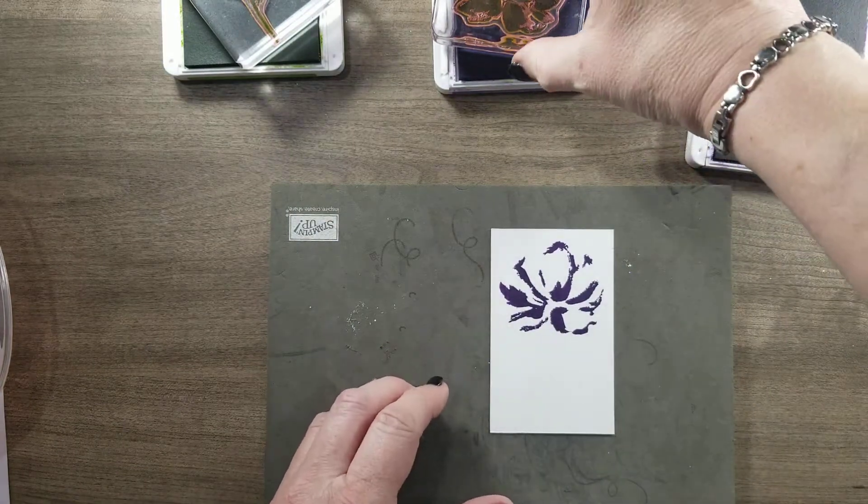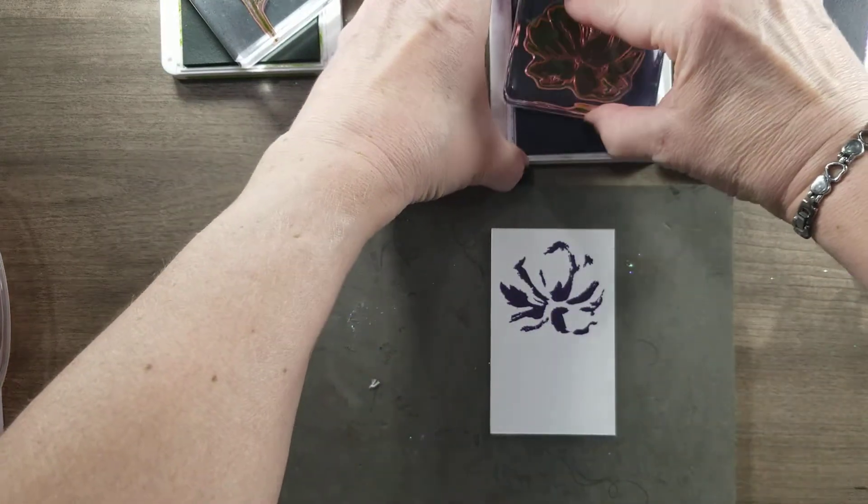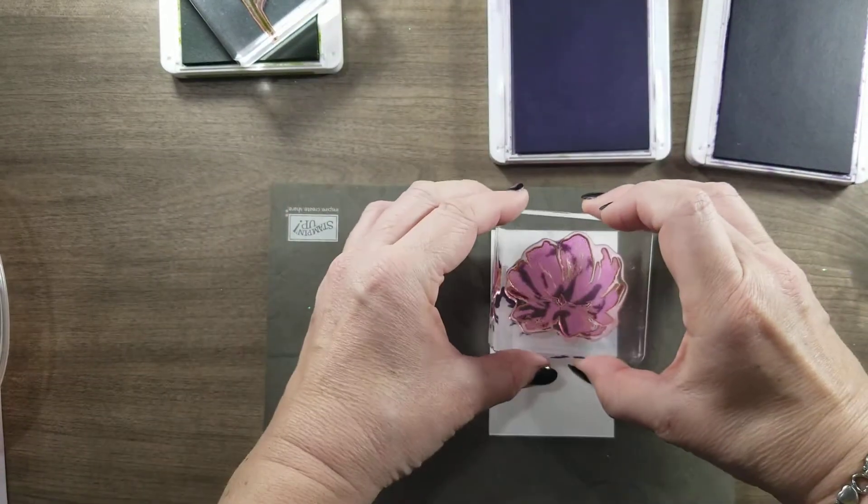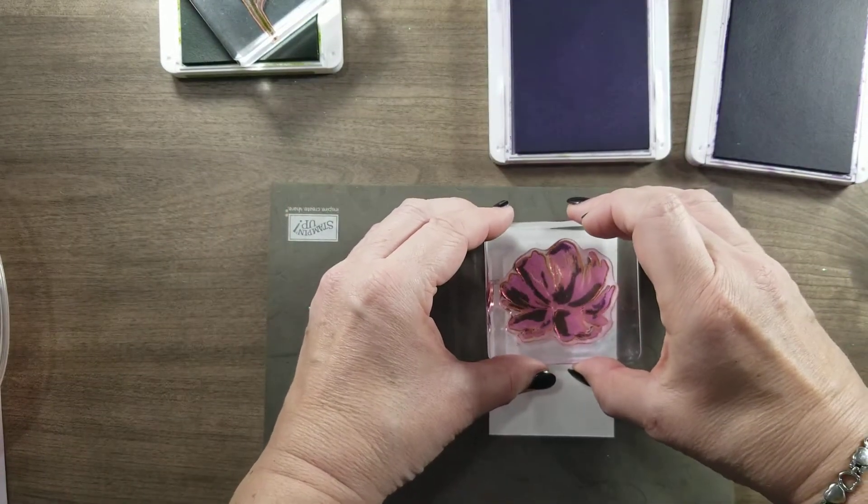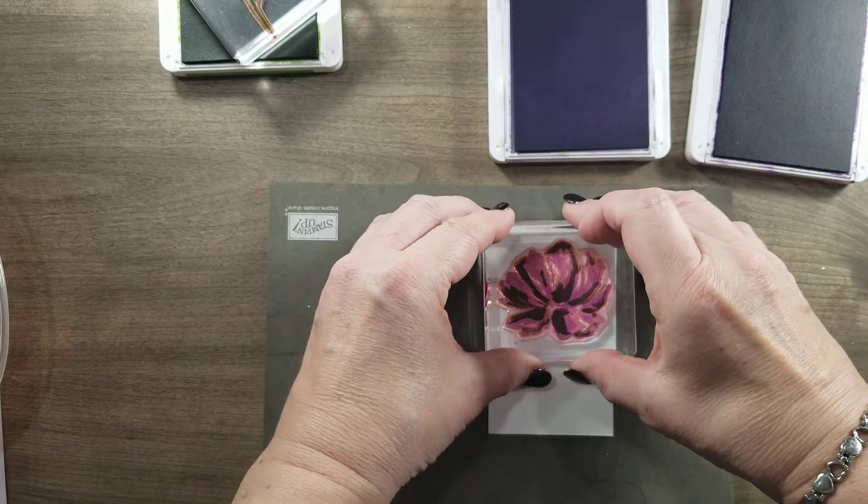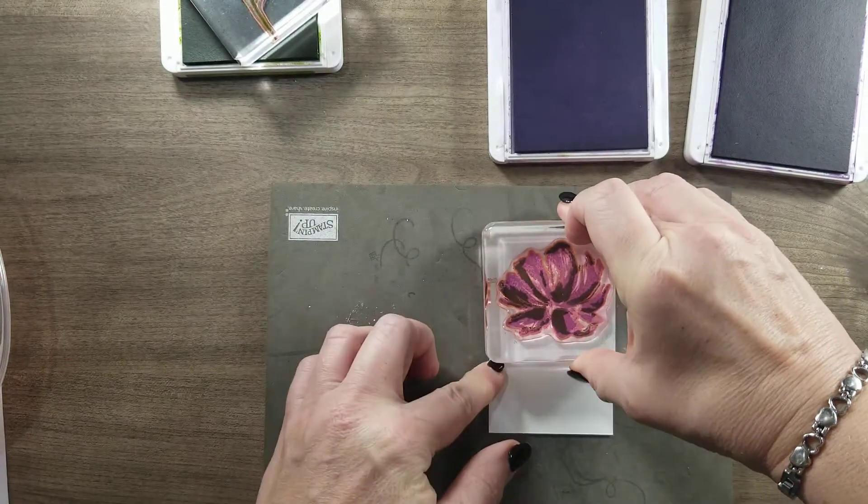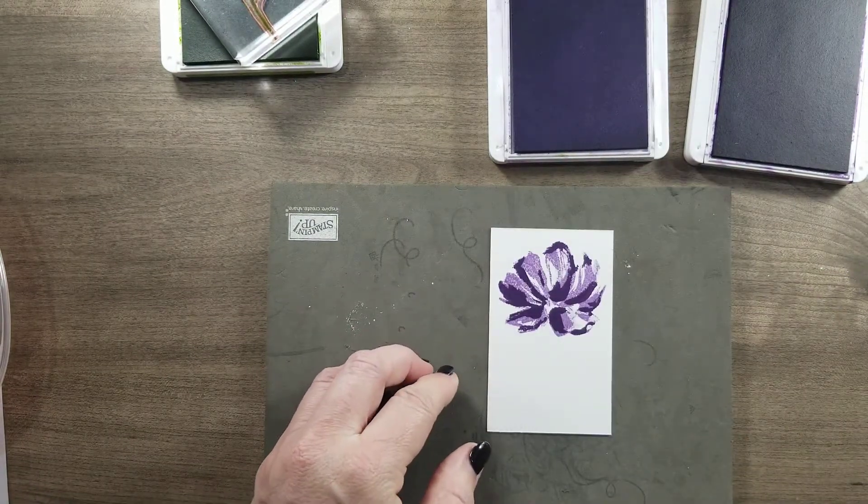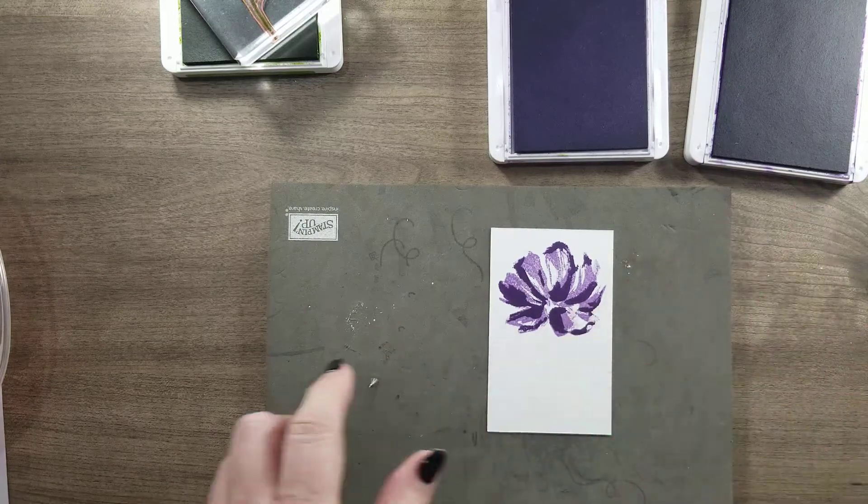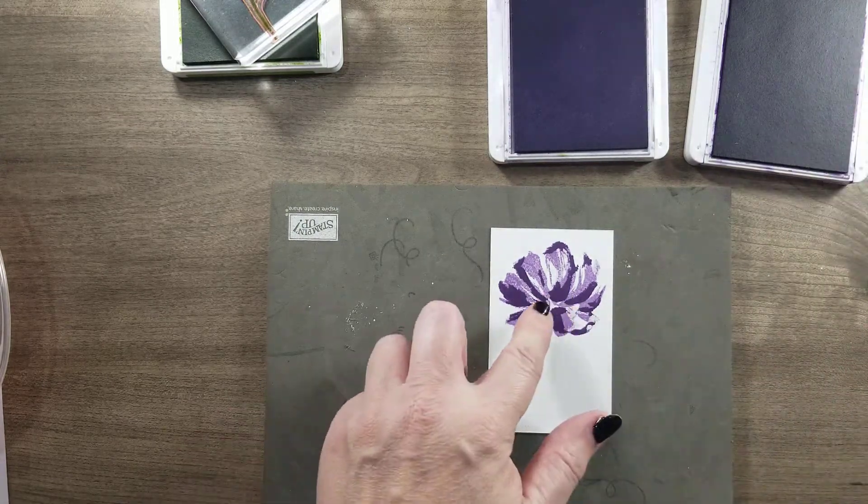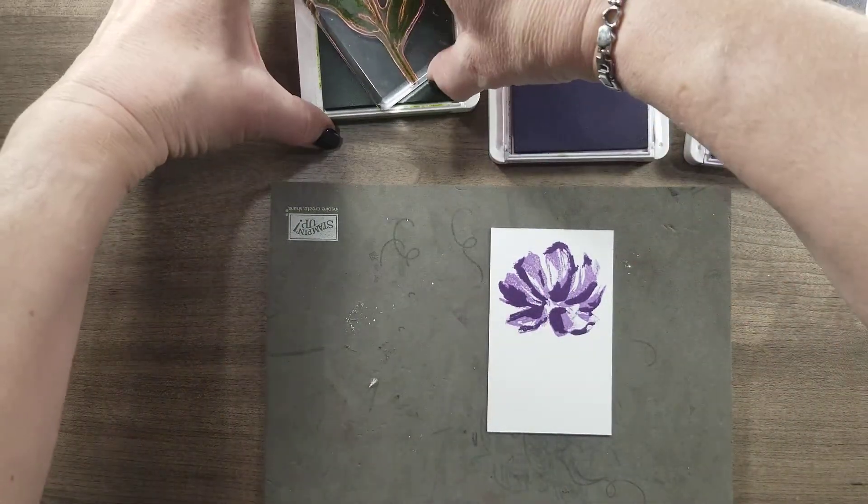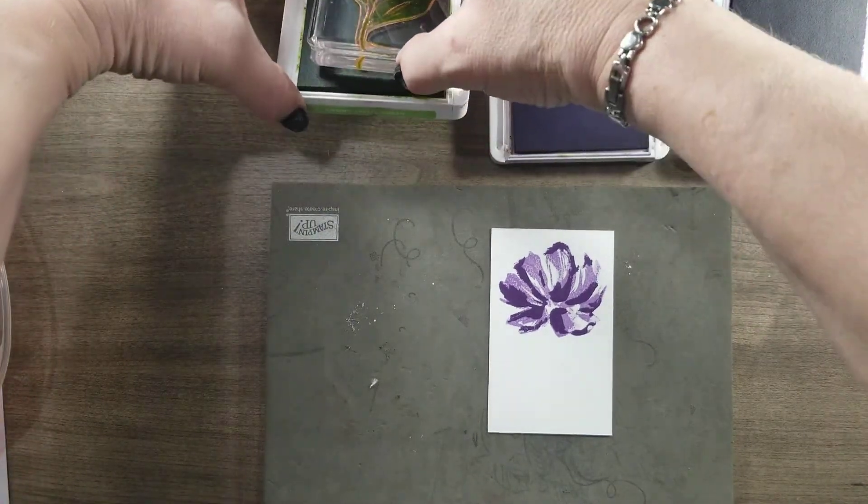Then I'm going to take Highland Heather and line that up. These don't really matter if they don't line up, but by putting the smaller one first and then the larger one, I can get a better image.